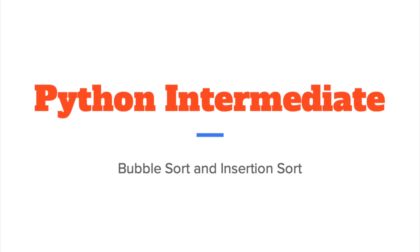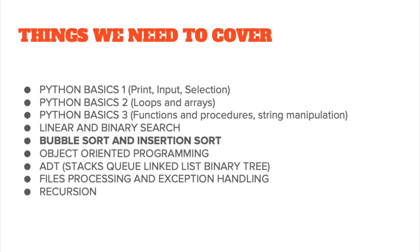You need to understand the algorithm and how these sorts can sort a set of data, and you also need to know how to code these. This is relevant to IGCSE level students because you will be asked to write or code this in your paper 2 exam, and also to A level students who are asked to code this in paper 4 and write about it in paper 3, especially in pseudocode. Coding this will enhance your understanding of the algorithm as well.